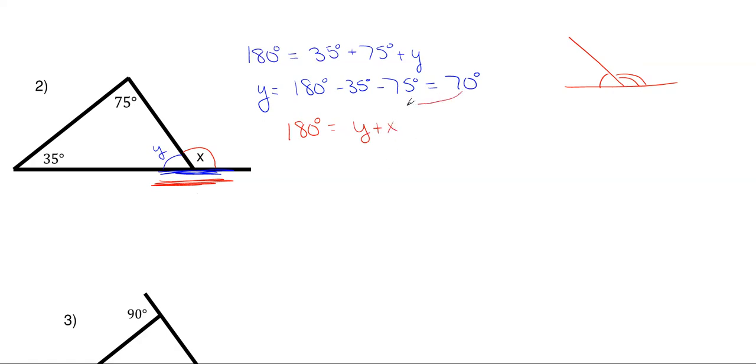So what this means is that 180 degrees is going to be equal to my y angle plus my x angle. Well, the y angle is 70 degrees, so plug that in there and then just rearrange for x. My x is going to be 180 degrees minus 70 degrees, and that gives me 110 degrees as my answer for my x.